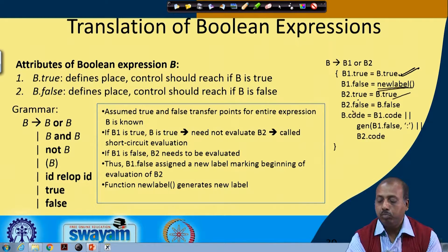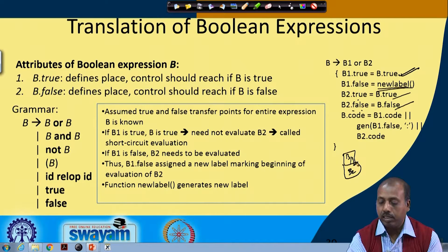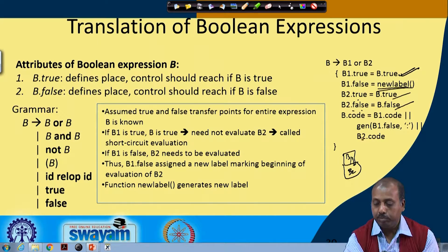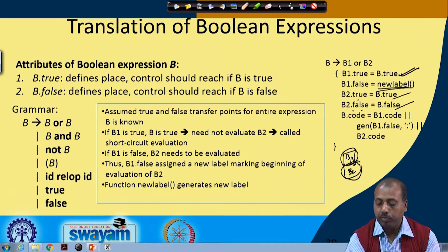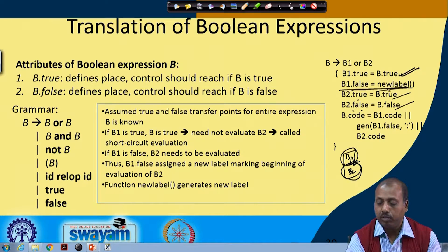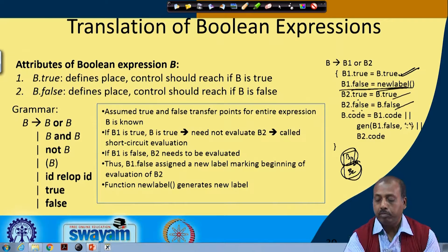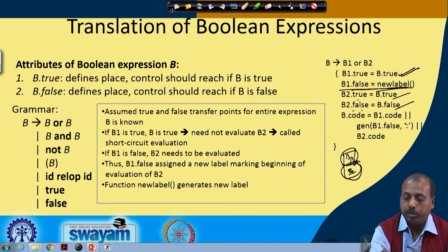B2.true is made equal to B.true and B2.false is made equal to B.false, because first I will have the code for B1, then the code for B2. If B1 is not true it goes like this, and then B2.false equals B.false. B.code is the concatenation of B1.code, then B2.code, but in between there will be a label that gets inserted.